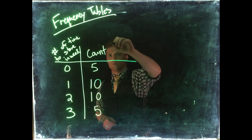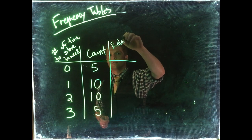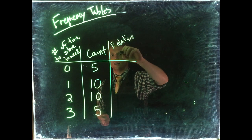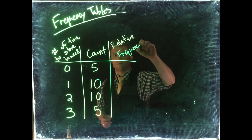And for three, we're going to go back down to five. In order to be a frequency table, we really need to add a relative frequency column.